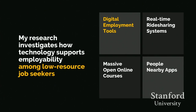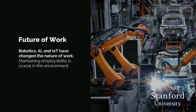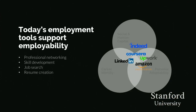Today I'll specifically talk about how digital employment tools do, don't, and could support the employability construct. The ubiquity of disruptive technology such as robotics, artificial intelligence, and the Internet of Things has changed the nature of work and continues to do so. There are already many tools providing support — sites like LinkedIn, Coursera, Udacity, Amazon Mechanical Turk, and Upwork — offering access to human and social capital, career identity, and personal adaptability.